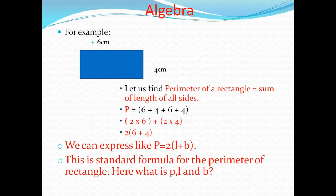To find the perimeter: P is equal to 6 plus 4 plus 6 plus 4, which means 2 times 6 plus 2 times 4. So 2 times (6 plus 4) = 2 times 10 = 20. The perimeter of the rectangle is 20 cm.